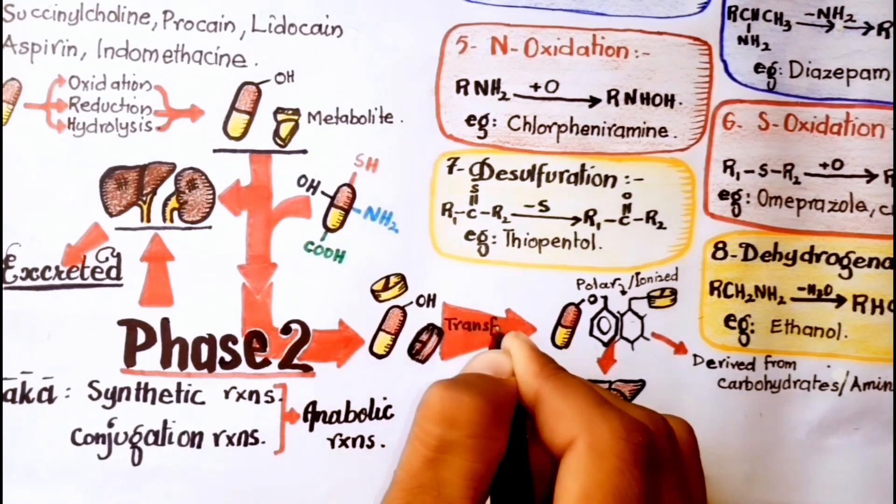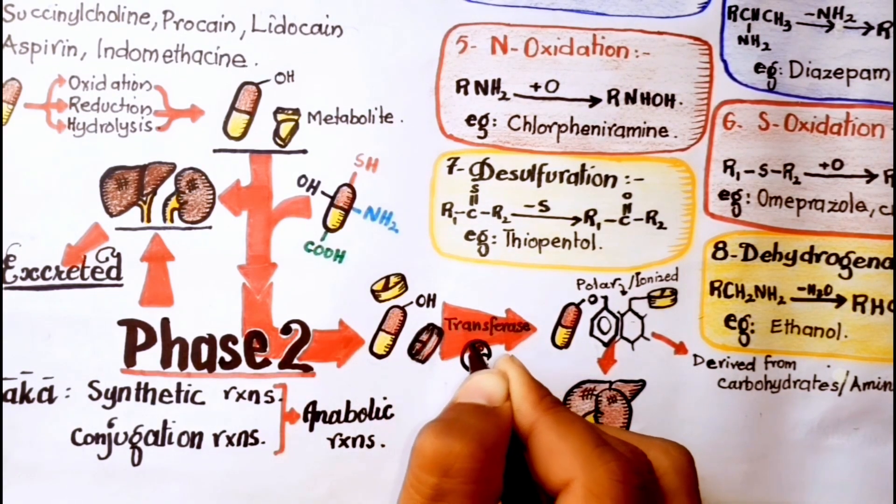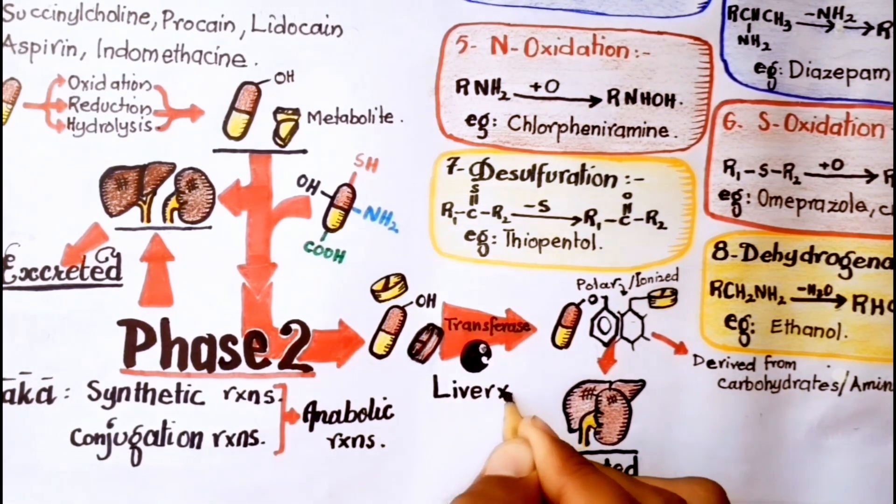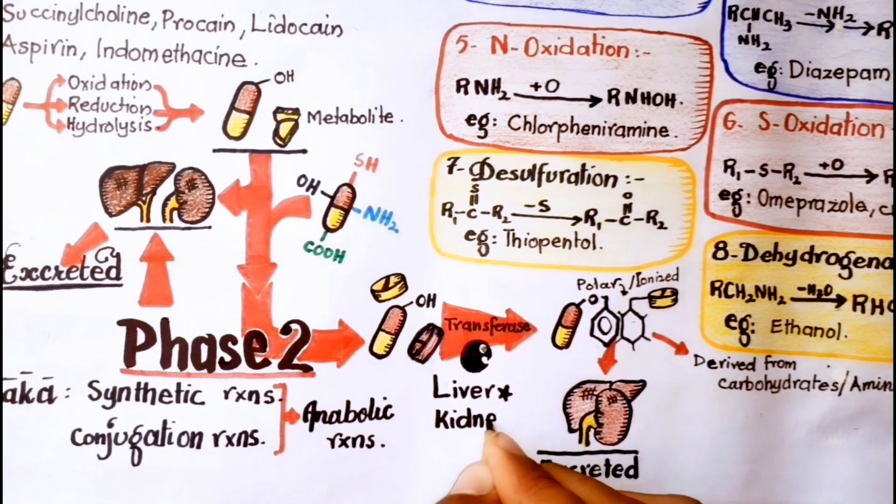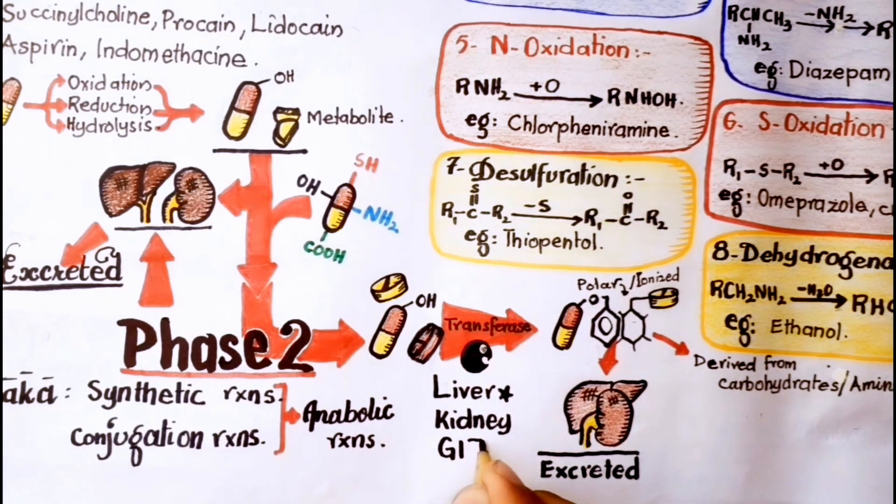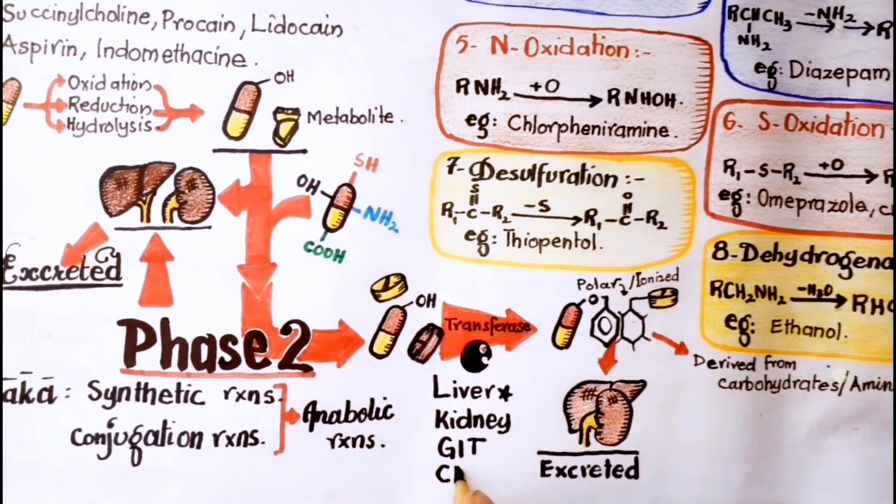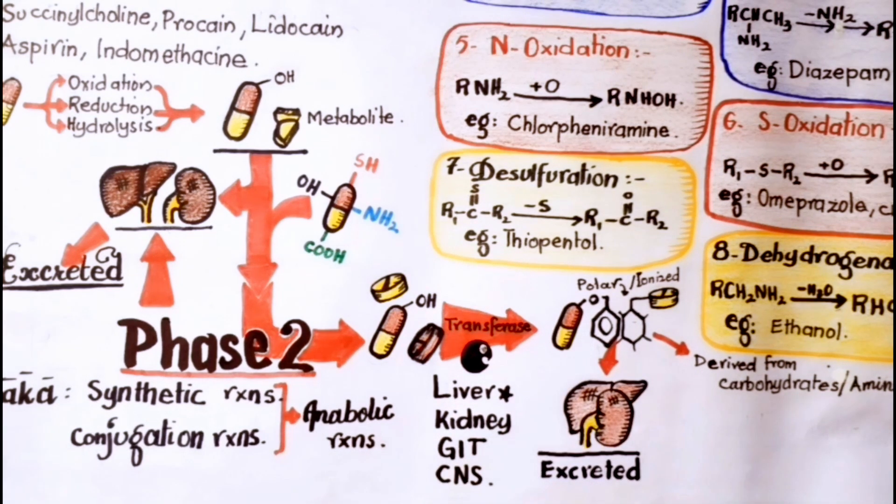Conjugate formation involves enzyme transferases, which are located in microsomes or in the cytosol with high concentration mainly in liver and other sites like kidney, GIT, and CNS. Phase 2 reactions usually result in biological inactivation. Phase 2 reactions produce a metabolite with improved water solubility and increased molecular weight, which facilitates elimination.